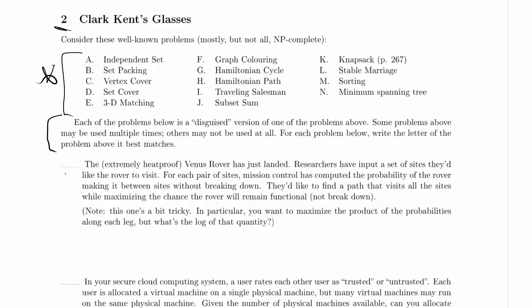Let's do a quick review of everything. I'm generally going to describe the decision versions of these problems — the ones whose answer is yes or no — rather than the optimization versions. Some don't exactly have optimization versions, but it's really worth being familiar with both, because you usually want to know the optimization version if you're going to prove NP-completeness.